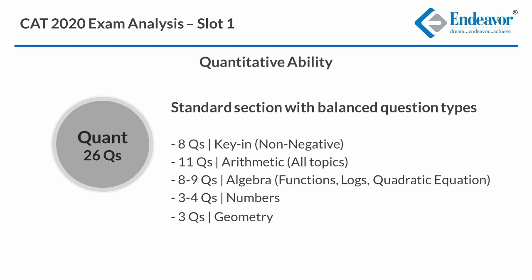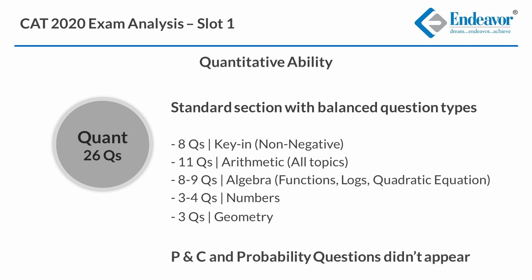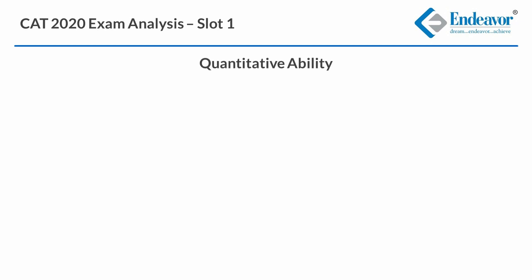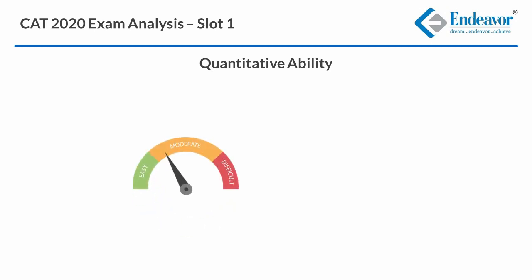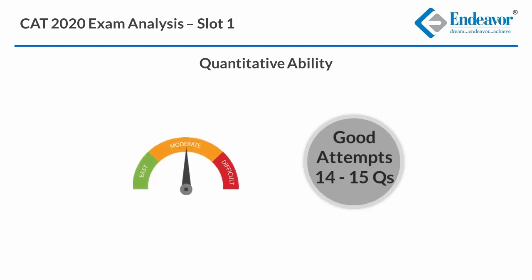Interestingly, permutation combination and probability questions did not appear. Overall, this sectional can be called a moderate sectional and a good attempt of 14-15 is considered good.